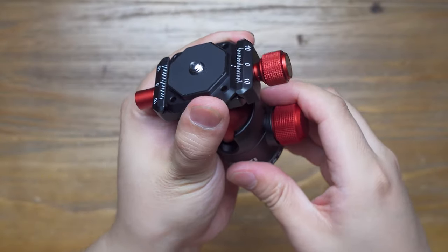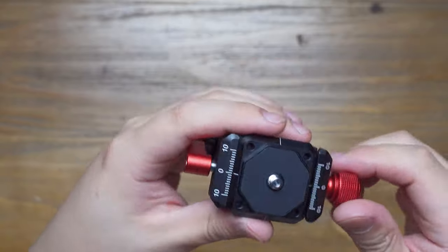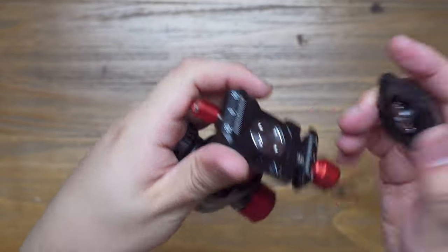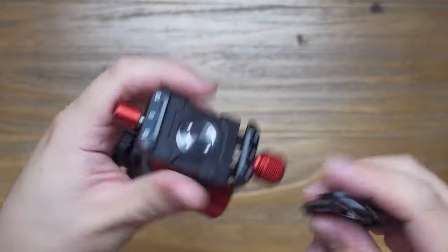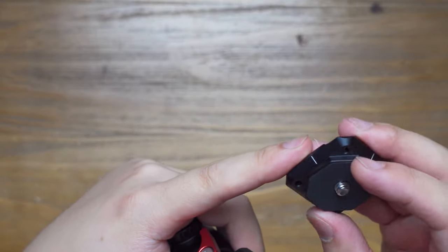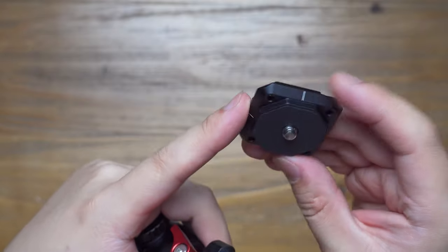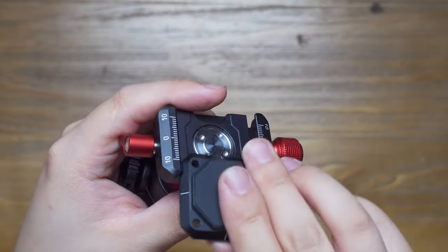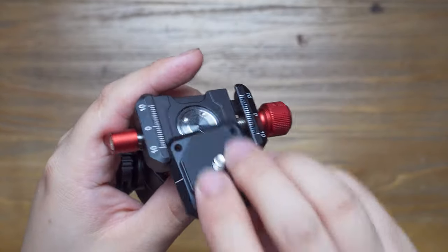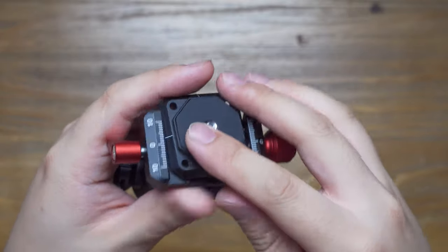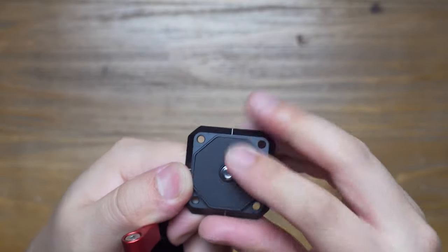Not only does it have a standard Arca Swiss design, but the plate is also Peak Design compatible. It has a square shape, and you can put it in any direction, like this or like this.